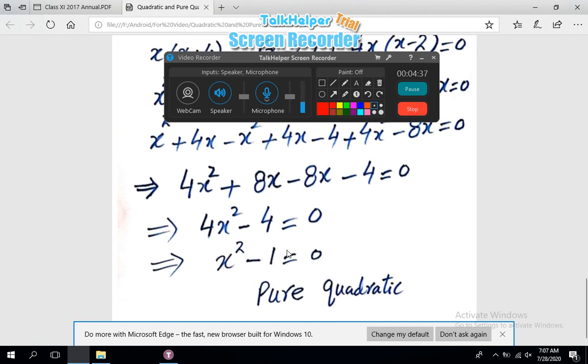In the next step, +8x and -8x will get cancelled. We are left with 4x² - 4 = 0, which implies by dividing both sides by 4 we will get x² - 1 = 0.